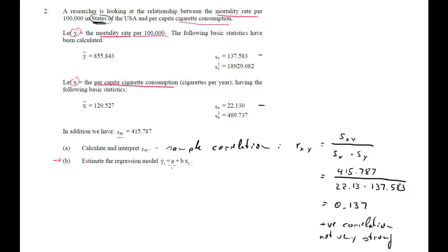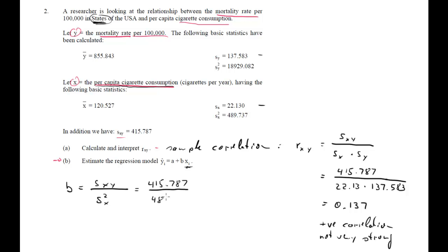Now estimate the regression model. We have slope coefficient b and intercept a. b is the covariance between x and y divided by the variance of the explanatory variable, which is x — cigarette consumption. It's unlikely that the mortality rate would influence cigarette consumption, so x is the explanatory variable. That is 415.787 divided by 489.737, the sample variance of x. We get b equals 0.849.